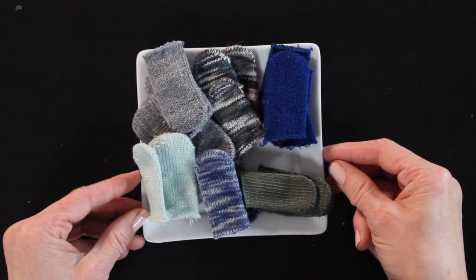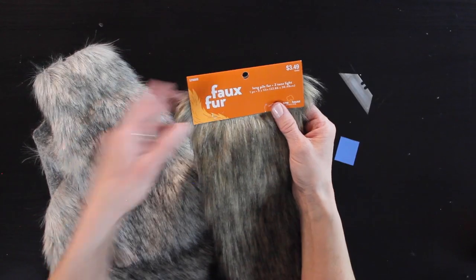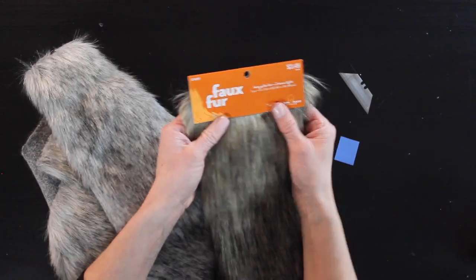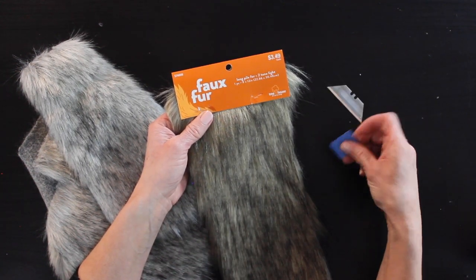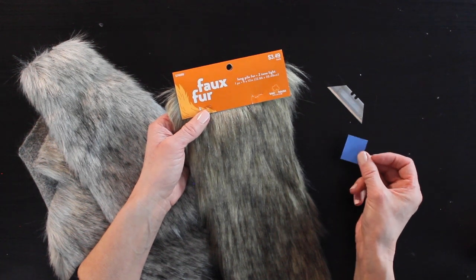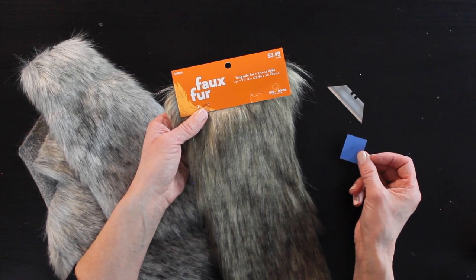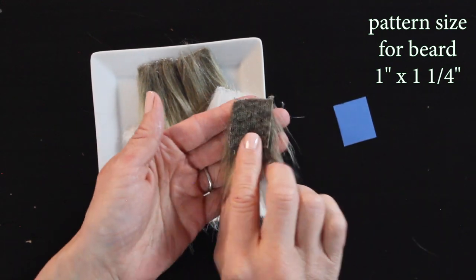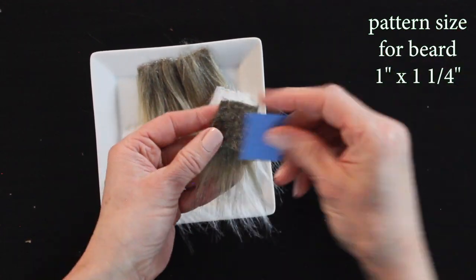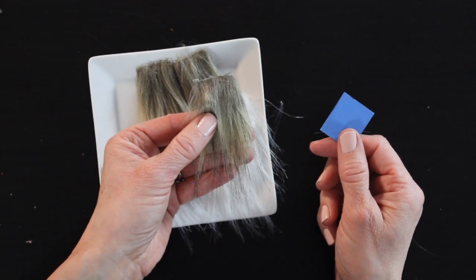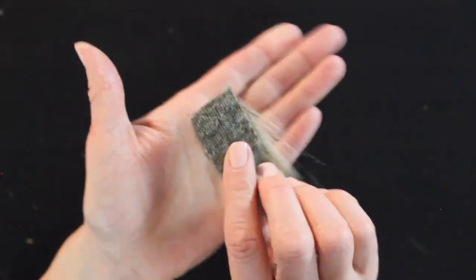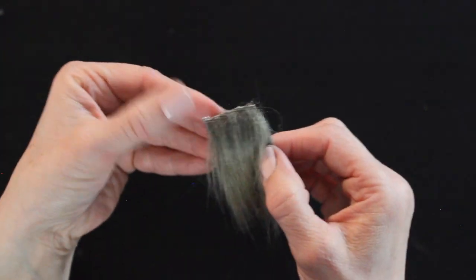Then you're going to need some faux fur. You can get this at the craft store or your local fabric store. I'll put some links below. This worked really well. I bought it with a coupon so it was super cheap, and then in the gnome ornament tutorial I teach you how to take the blade and a little pattern to cut out the beards. What I like to do when I'm making a lot of gnomes is cut out several of the beards at once so I don't have to keep going back and getting my razor blade out and measuring it. I just do a whole bunch at once.